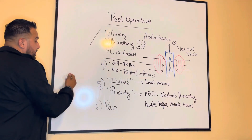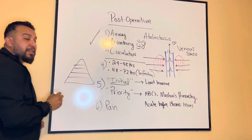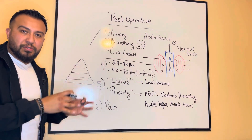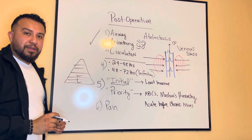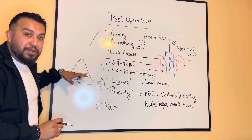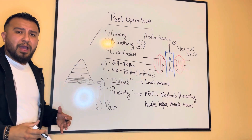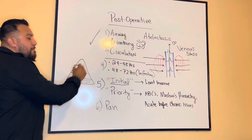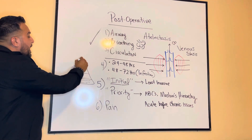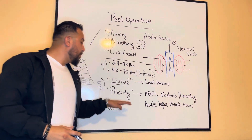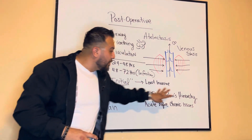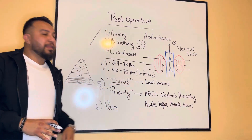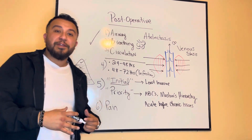Maslow's hierarchy of needs is a pyramid where you must address certain elements before moving to the next level. First, address physiological elements. Then safety and security. Then love and belongingness. Then self-esteem. And lastly, self-actualization. Any time you're dealing with a priority intervention question, use ABCs and Maslow's hierarchy of needs, and always address acute issues before chronic issues. Keeping these basic elements in mind will make it much easier to break down the question and intervene accordingly.